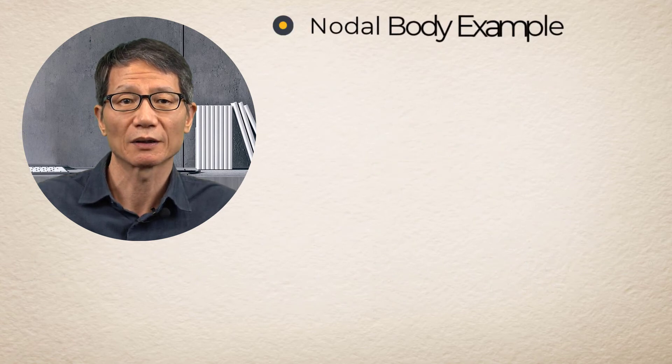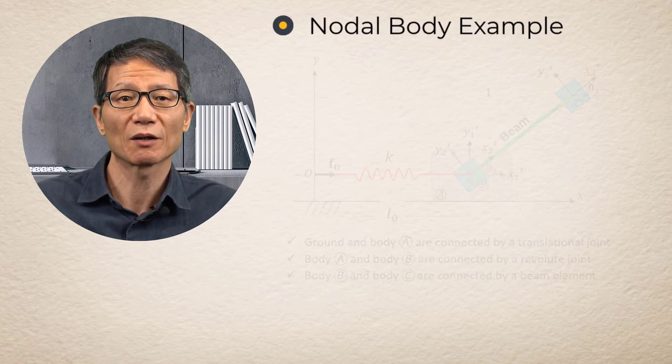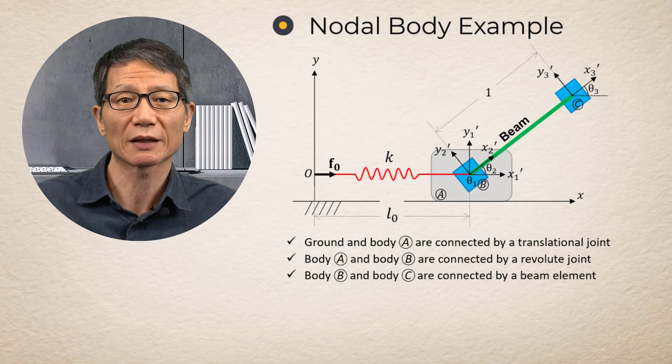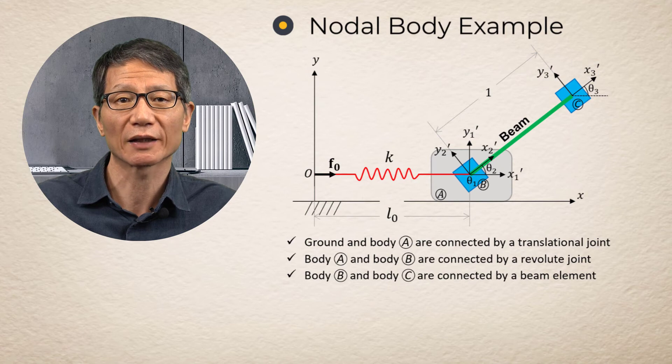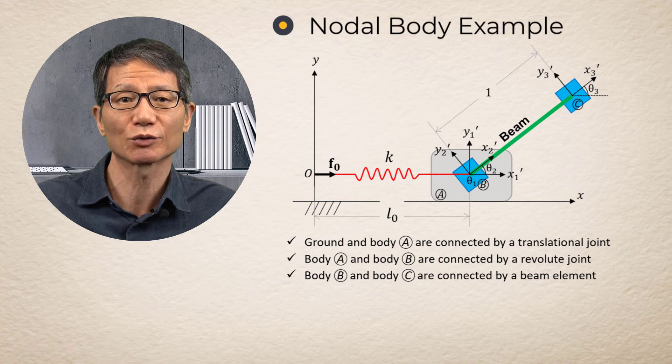Nodal body example. Let's take a similar model we have used for rigid body systems. The second body is divided into two nodal bodies connected by a beam element. Therefore, the system consists of one rigid body and two nodal bodies connected by a beam element.